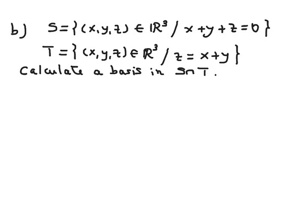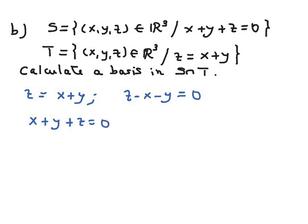Before starting, we must check that T is a vector subspace. It is, because the equation Z equals X plus Y is the same as Z minus X minus Y equals 0, which is a linear and homogeneous equation. So T is indeed a vector subspace. To calculate a basis in S intersection T, we must identify those vectors verifying both equations: X plus Y plus Z equals 0, and Z equals X plus Y.